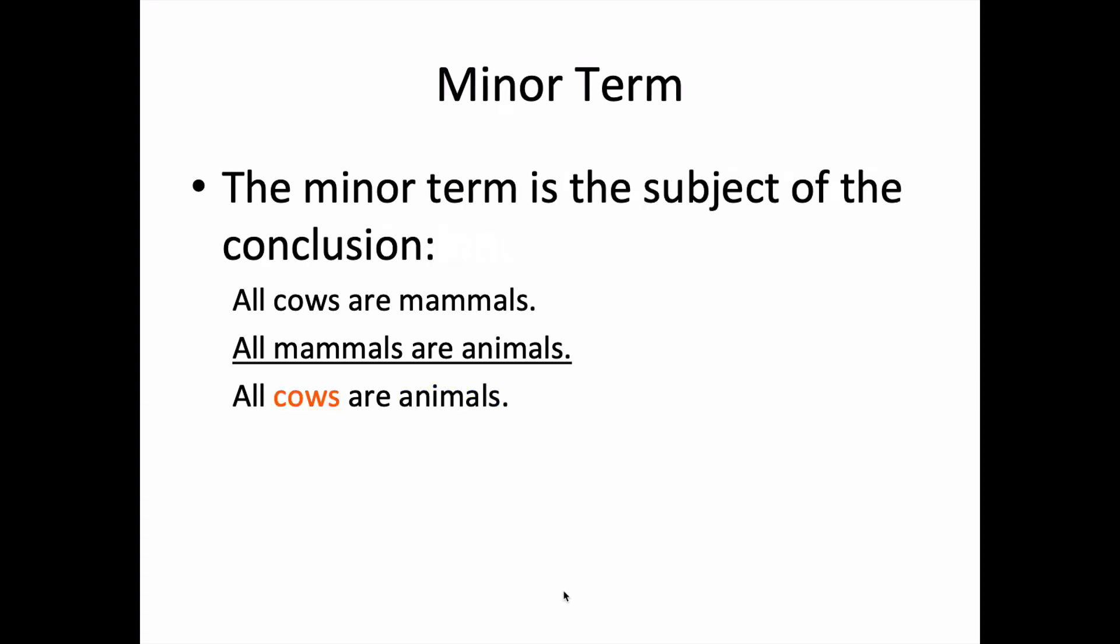The minor term is the subject of the conclusion. In this case, the subject class cows, or the grammatical subject cows, is the minor term in the argument.